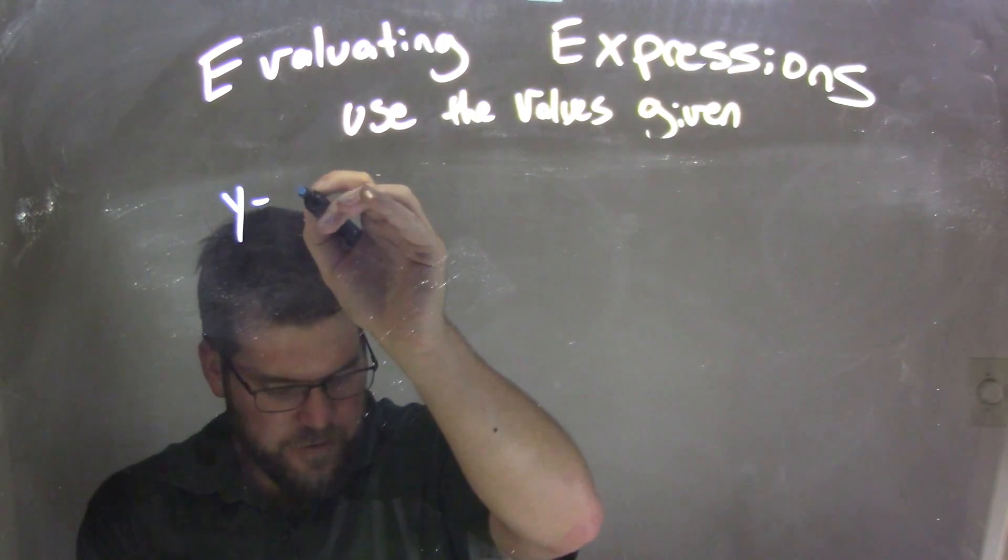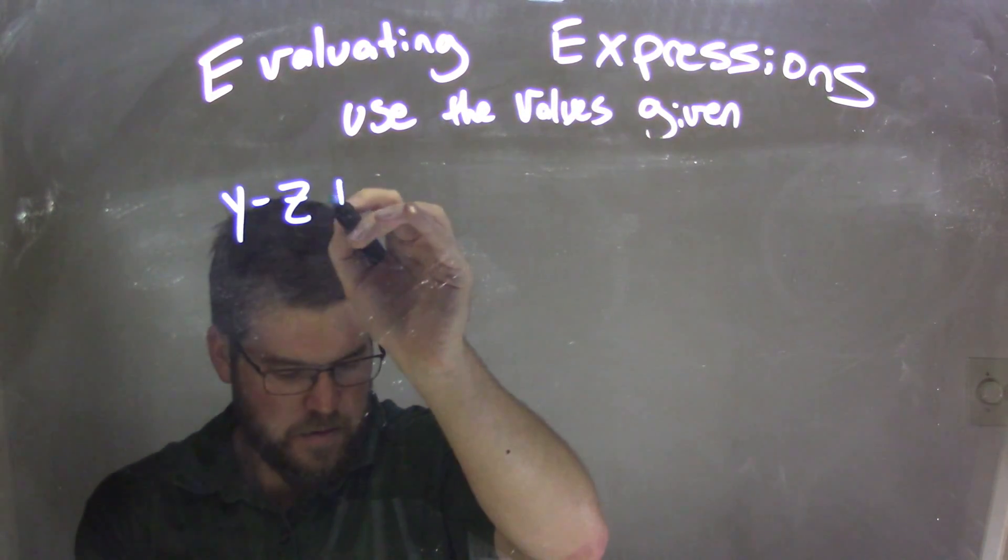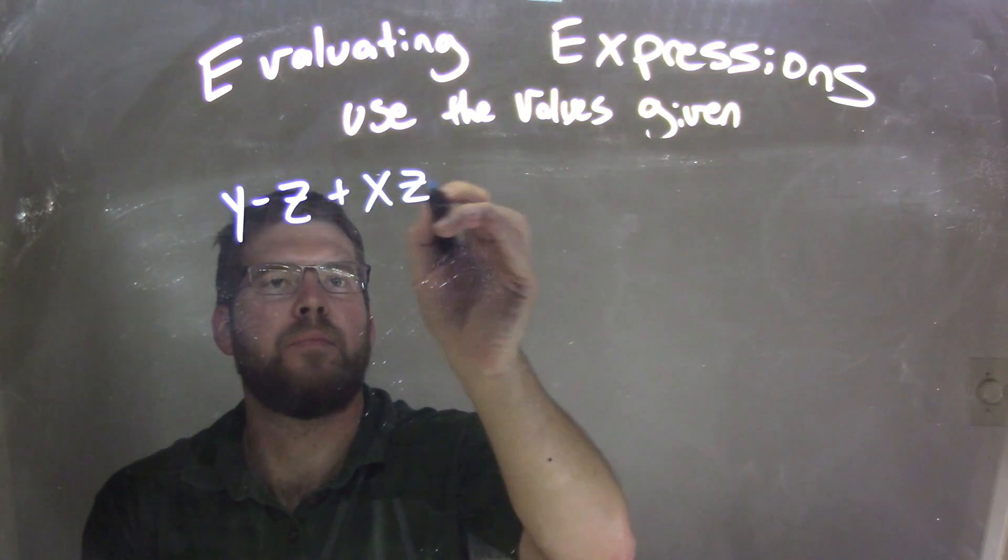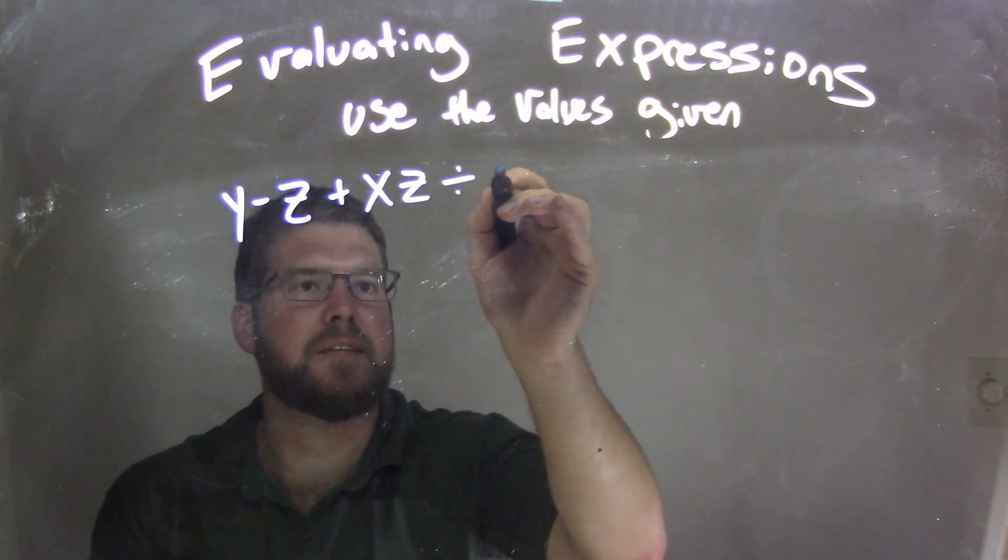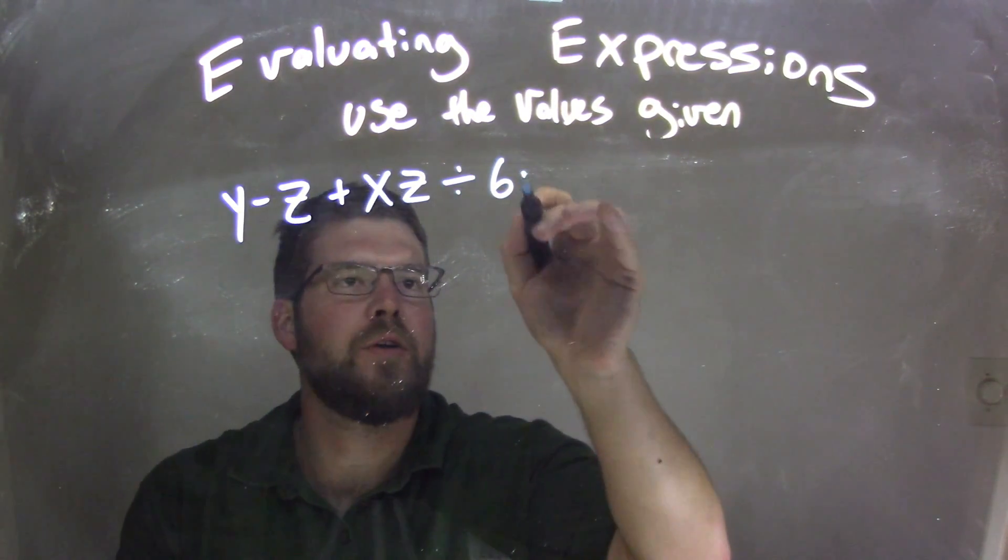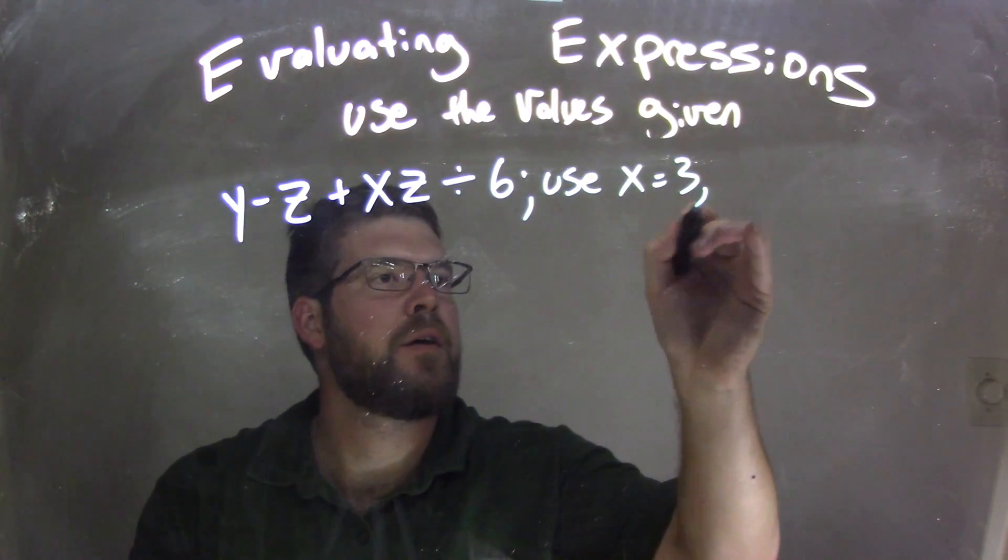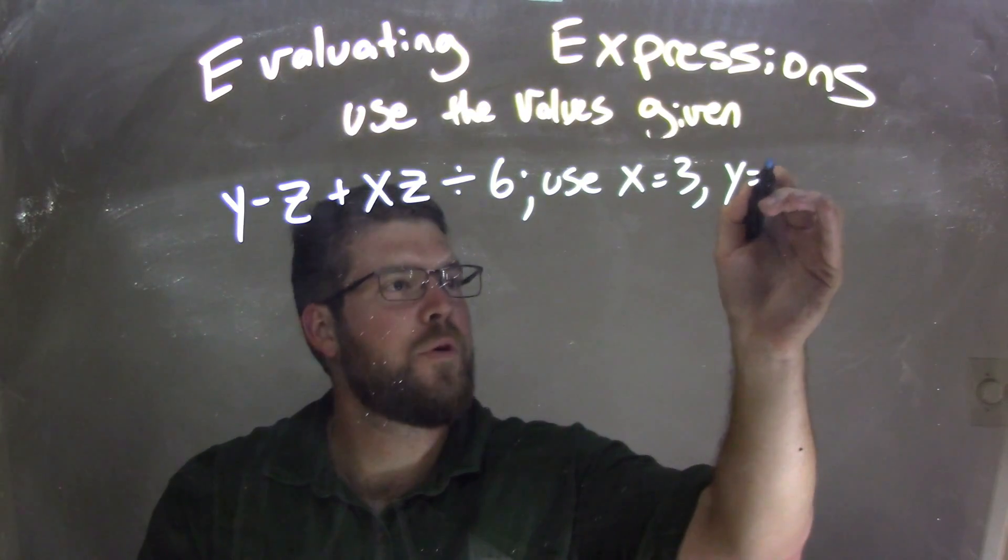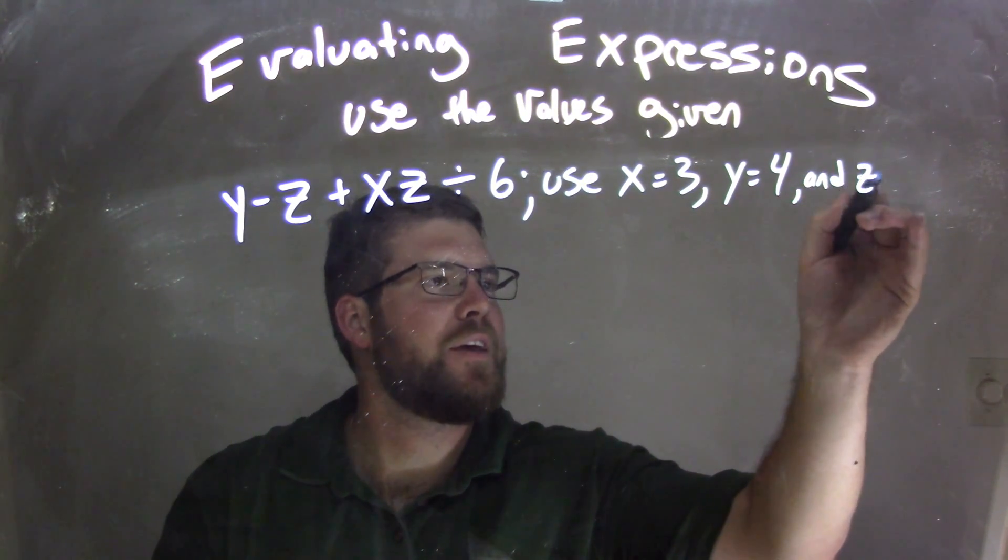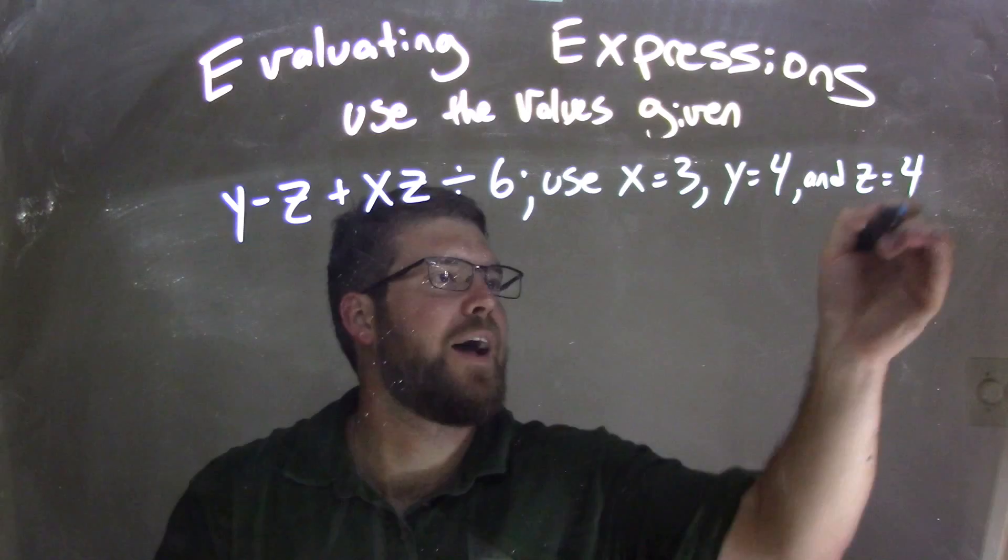So if I was given this expression: y minus z plus xz divided by 6, and we're going to use x equals 3, y equals 4, and z equals 2, 4 as well.